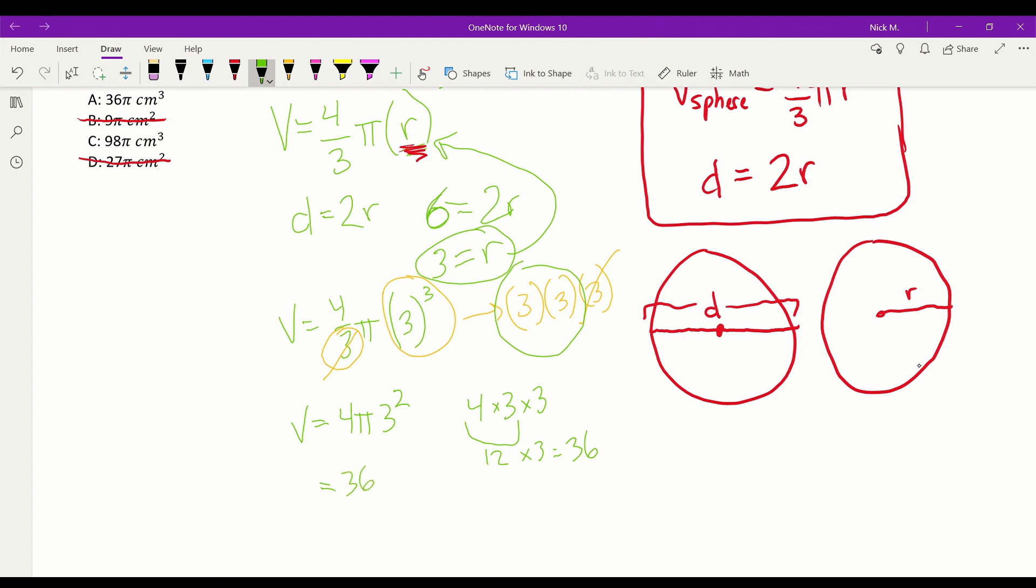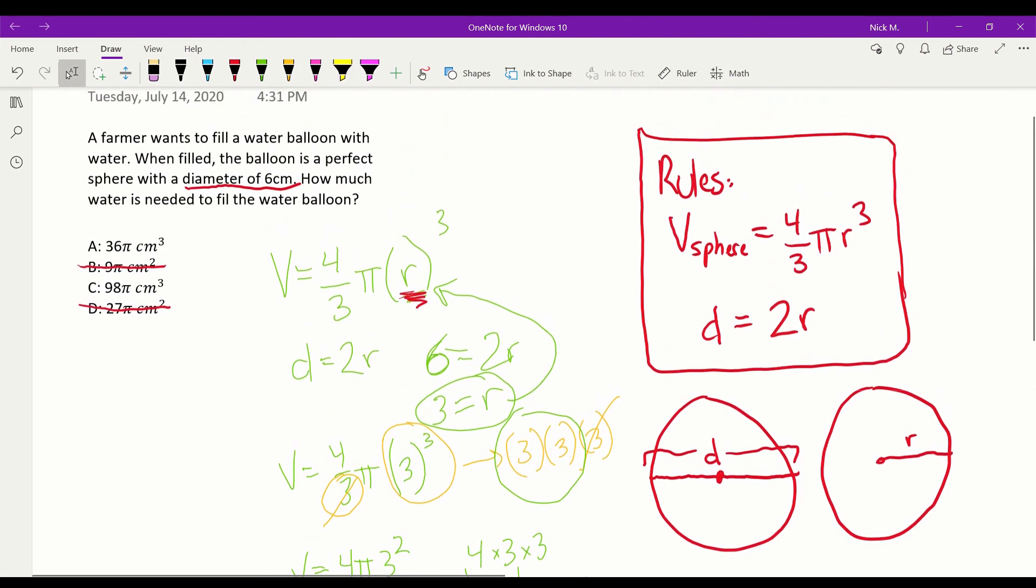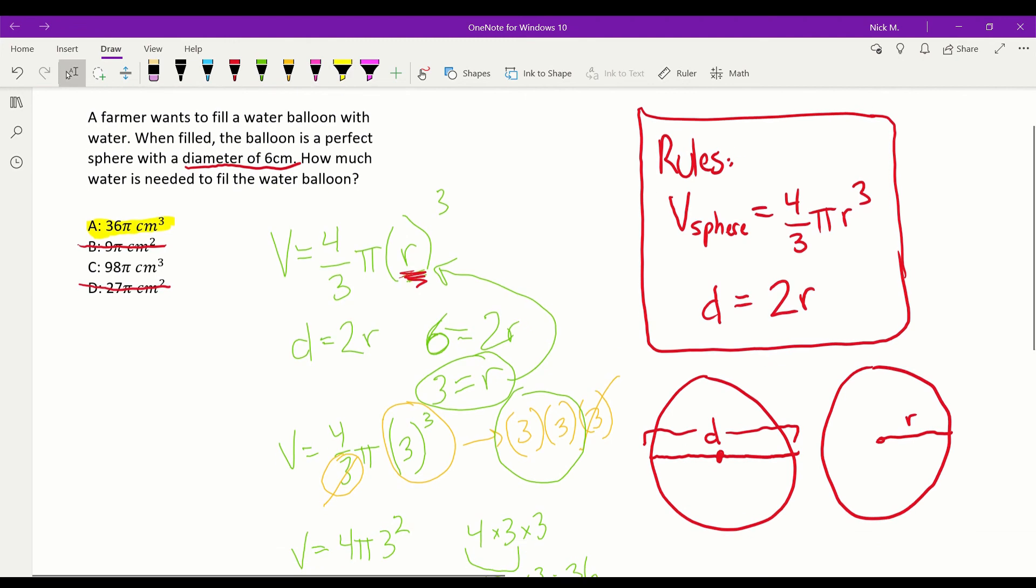So now I have 36 pi centimeters. We're working with volume cubed. And that is hopefully an answer because that's as far as we can go. And yes, sure enough, A, 36 pi centimeters cubed.